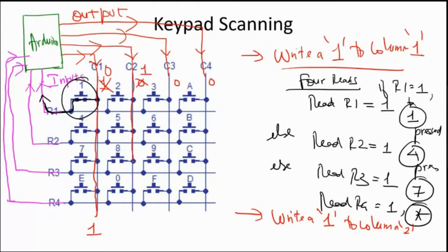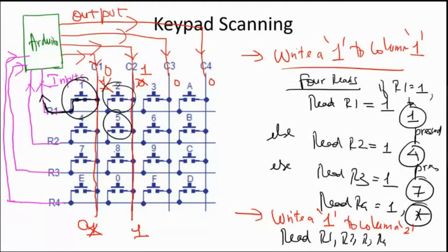For column two, write one to column two and zero to all others so only that column line goes high. Then read all four rows cyclically: if R1 is one, switch two is pressed; if R2 is one, switch five is pressed; if R3 is one, switch eight is pressed; if R4 is one, the corresponding key is pressed. Then repeat for column three and column four. By making one column high at a time and cyclically reading all four rows, we detect which key is pressed — this is called keypad scanning.